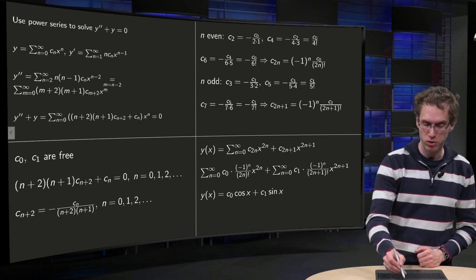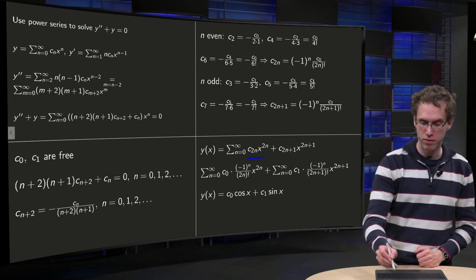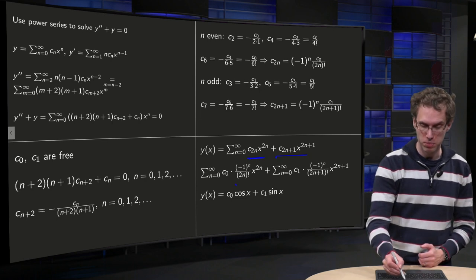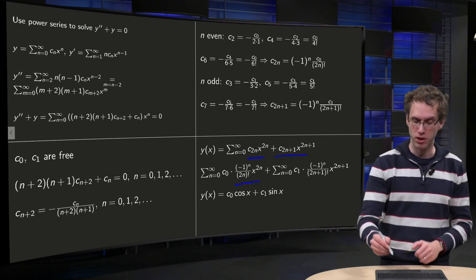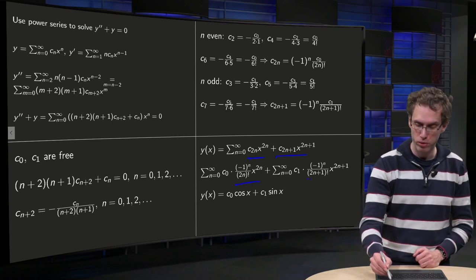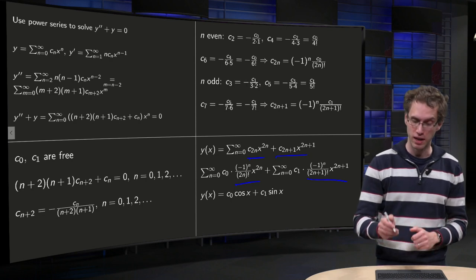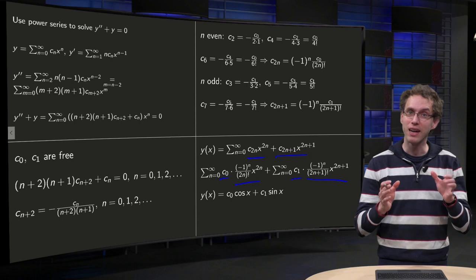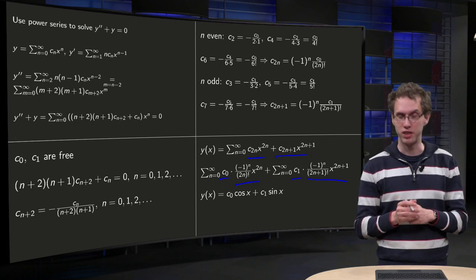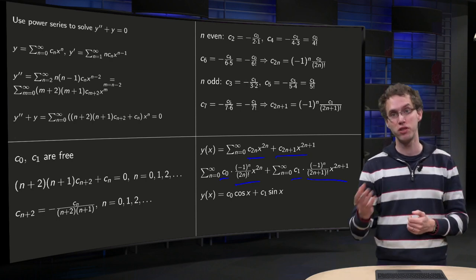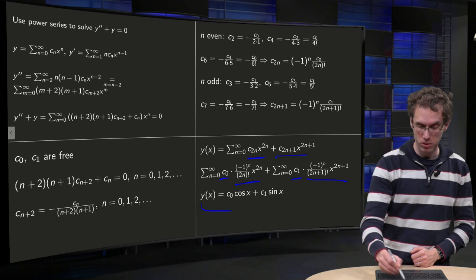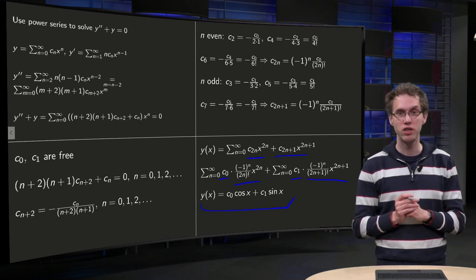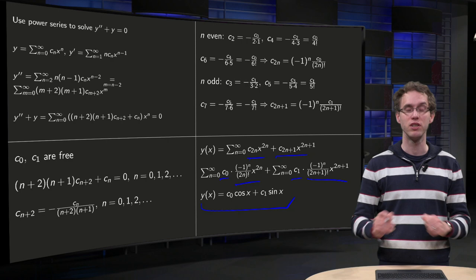So you can summarize: the total solution has even terms and odd terms. For the even terms we had an explicit expression times c₀; for the odd terms an explicit expression times c₁, where c₀ and c₁ are free. Now you recognize these power series as the power series of cosine x and sine x, so you can conclude that the final solution is y(x) equals c₀ times cosine x plus c₁ times sine x.